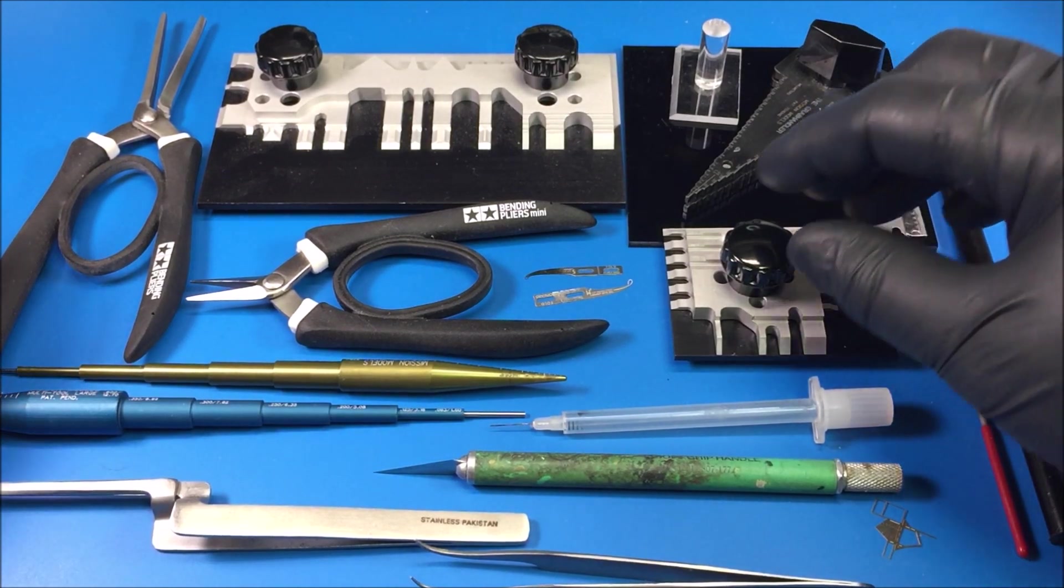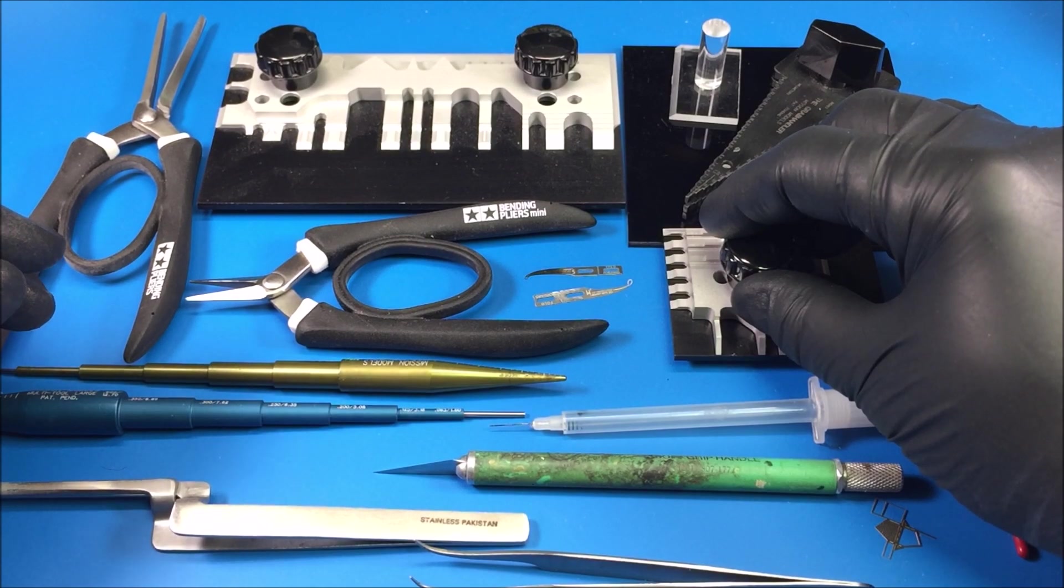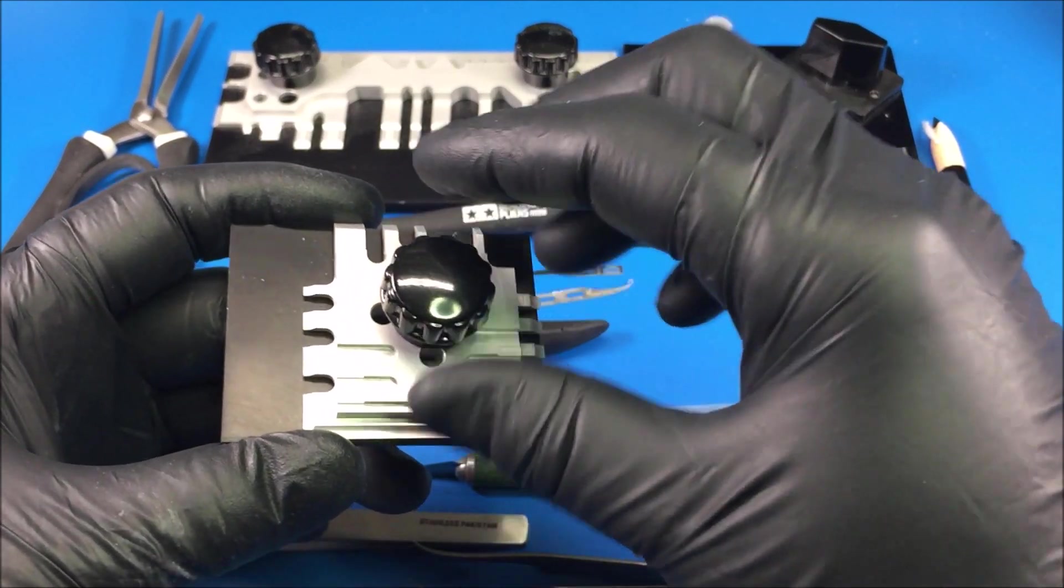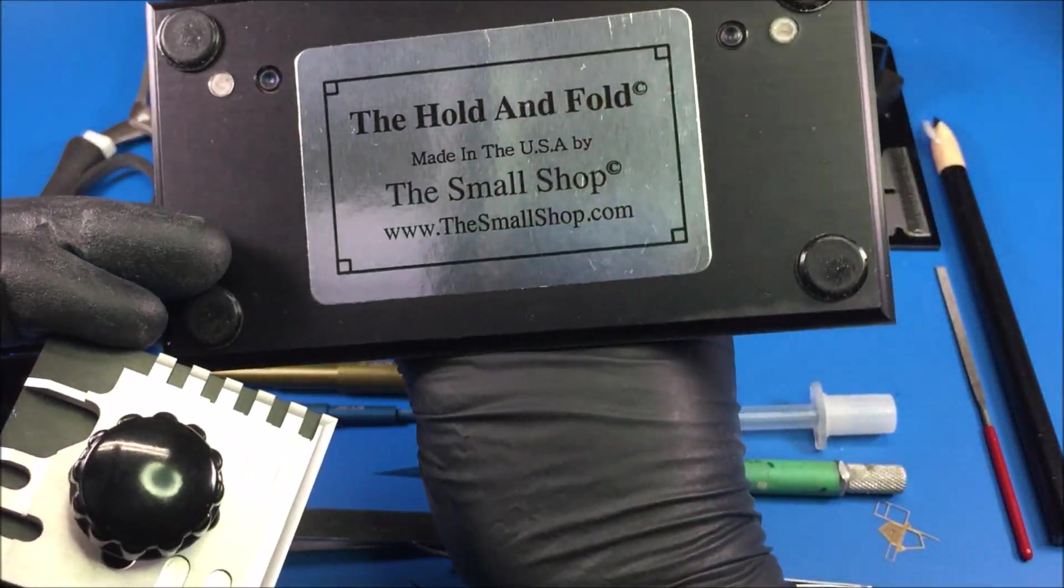Now if you want to get into different tools, better tools that'll help you even more once you get the basics down, you can get yourself a tool like this. It's called a photo etch brake. I use this one quite a bit - it's called the Bug, made by the Small Shop.